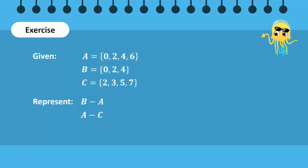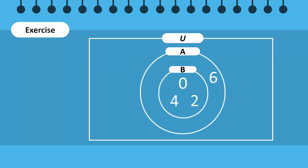Now let us review. Observe that B is a subset of A, so the circle for set B will be placed inside the circle for set A in the Venn diagram. B difference A contains the elements that are in set B but not in set A. Since there are no such elements, it is an empty set, and we do not shade any region.